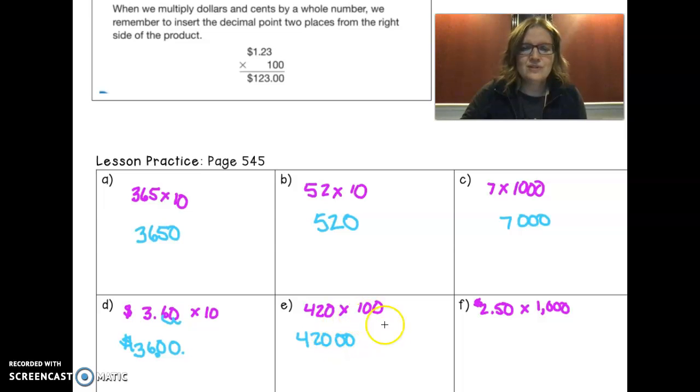420 and then add one, two, one, two, three, so we have three zeros, and then 2.5 times 1,000. We bump this in two decimal point places, so one, two, it's right there, and so we have $2,500.